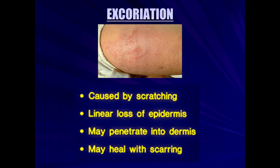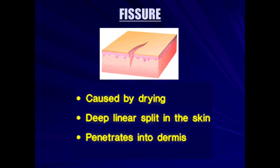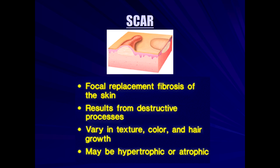Fissuring, where the skin is broken down. Scarring, where you get keloid formation — seen as a result of surgery or trauma of any kind in patients of all different skin types.